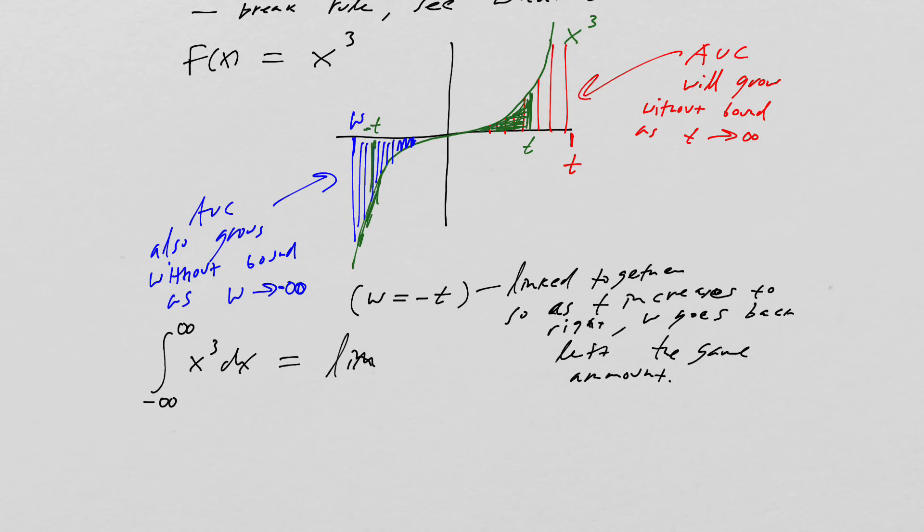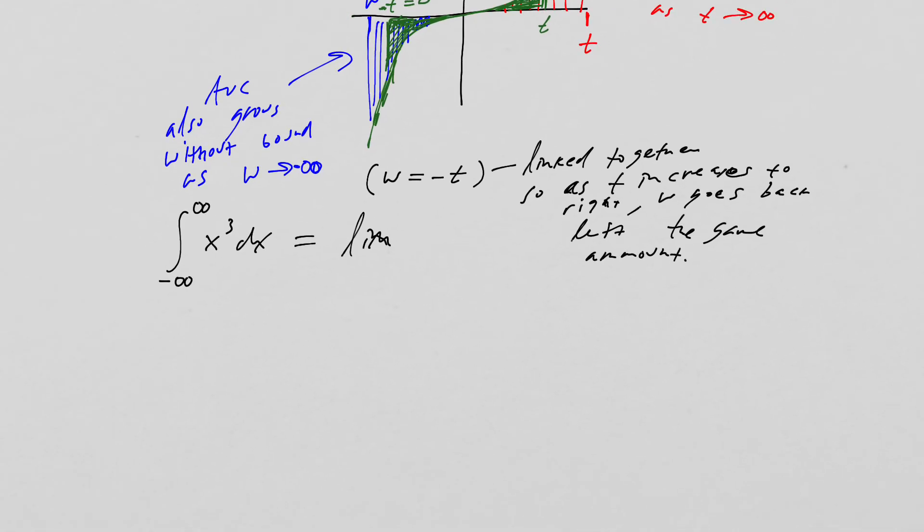If I take t to be here and I take t to be there too, that'll be negative t down here, which is w and I get that area, because this function is symmetric, those two areas are going to cancel perfectly. Alright. So let's see if I try it this way. So now I'm going to take the limit as t goes to infinity of the integral from negative t to t of x cubed dx.